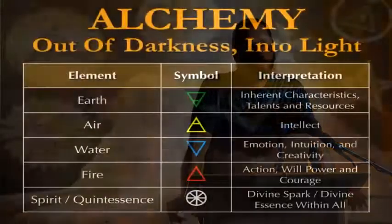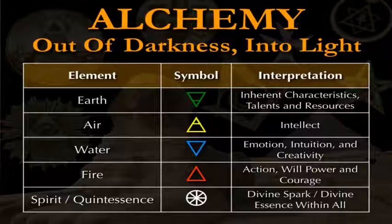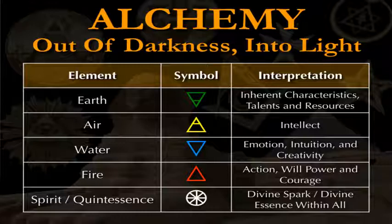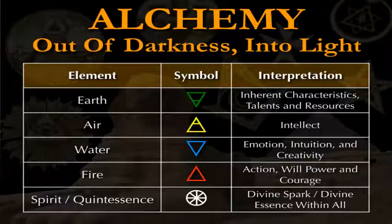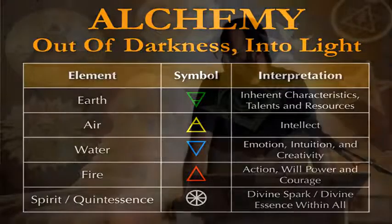Then there was a fifth element. You have earth, air, water, and fire, and then you had the quintessence, meaning the fifth essence. The fifth element was spirit, represented by a solar wheel with eight spokes, a circle and then an eight spoke cross in the middle of it. This represented the divine spark or the divine essence within all of us, the essence of the source, the creator, the underlying intelligence in nature, which is ultimately present in everything within nature, including us.